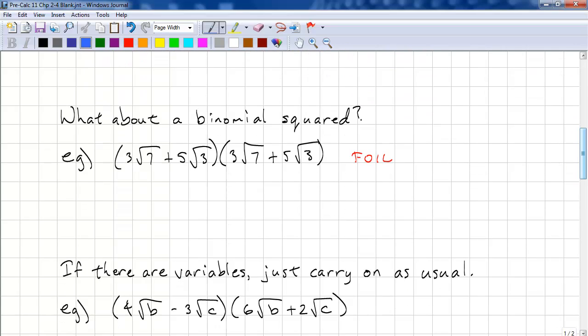What about a binomial squared? So this is not a conjugate, but let's see what happens when we square a binomial. Okay, 3 times 3 is 9. And root 7 squared. And outer. 3 times 5 is 15. And 7 times 3 is 21. For the inner, we have exactly the same thing. Plus 15, root 21. And for last, 5 times 5 is 25. And square root 3 squared.